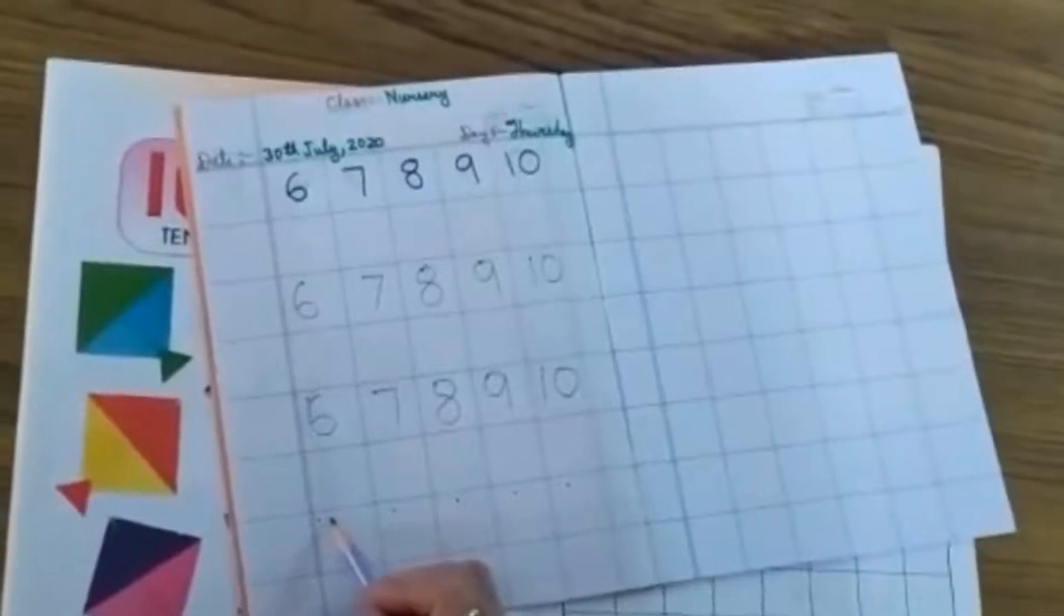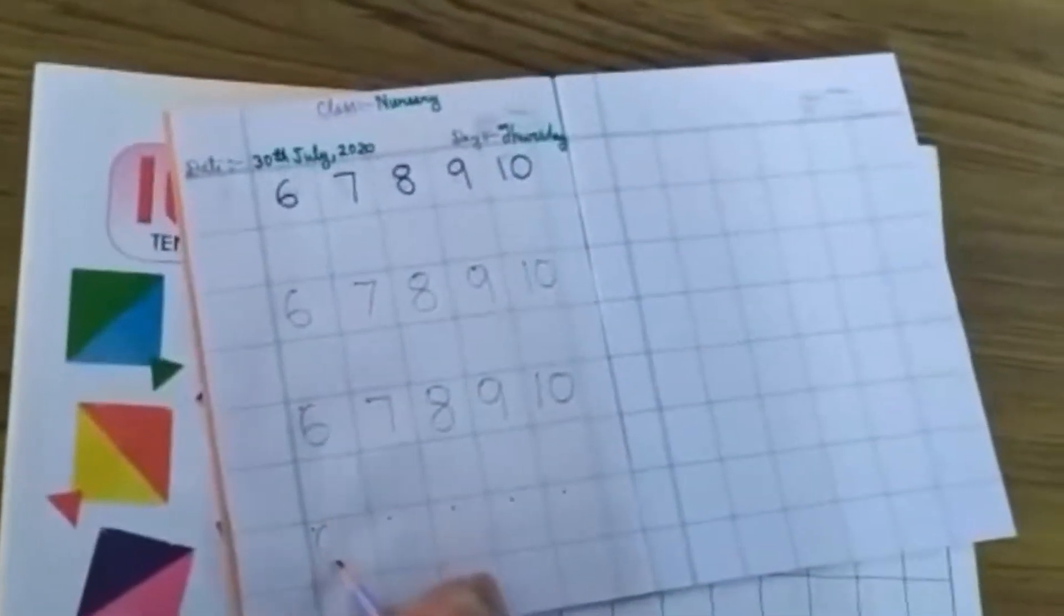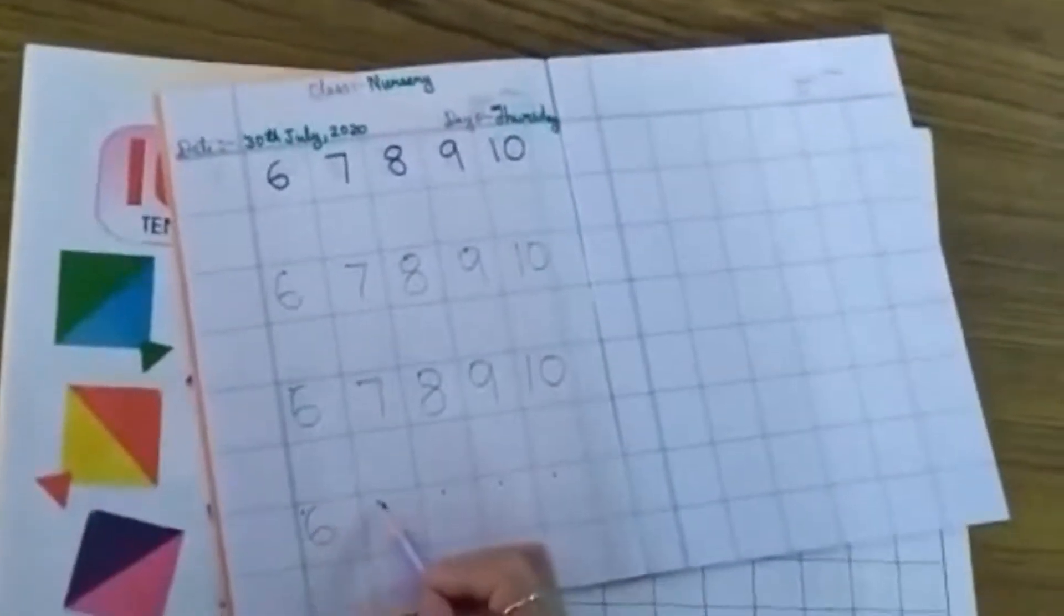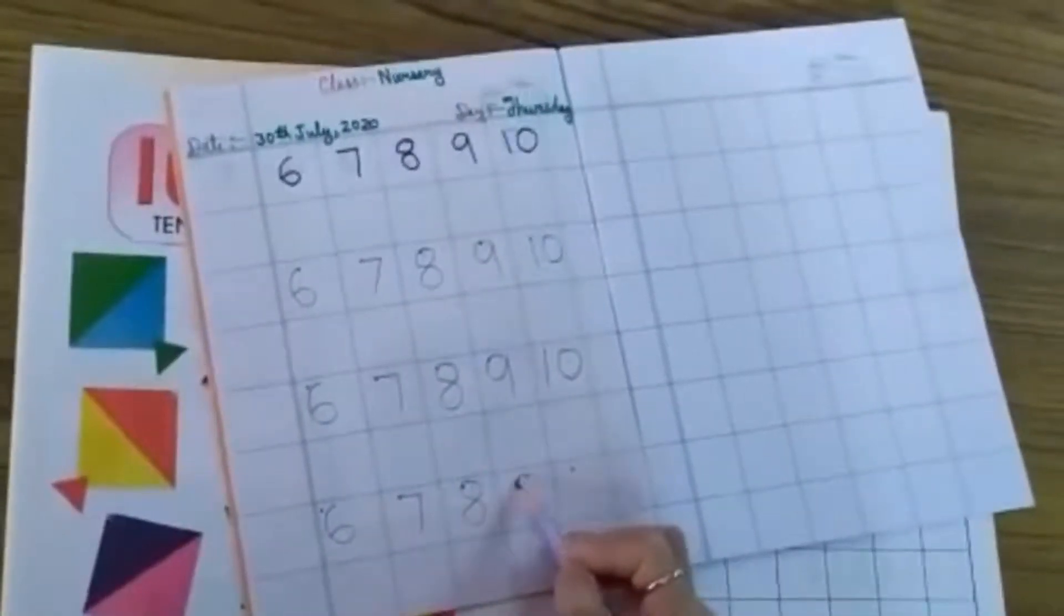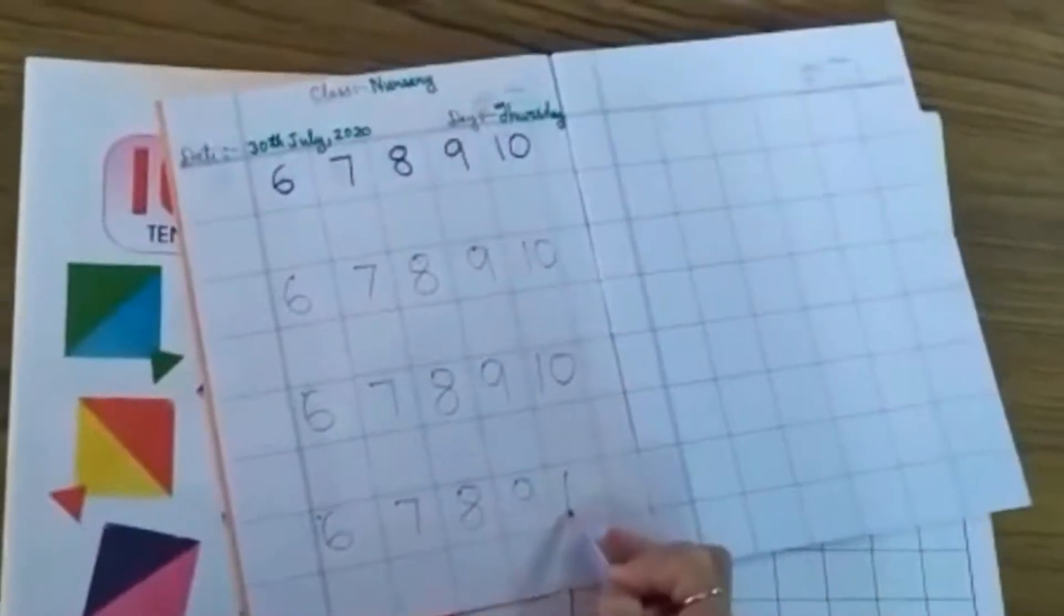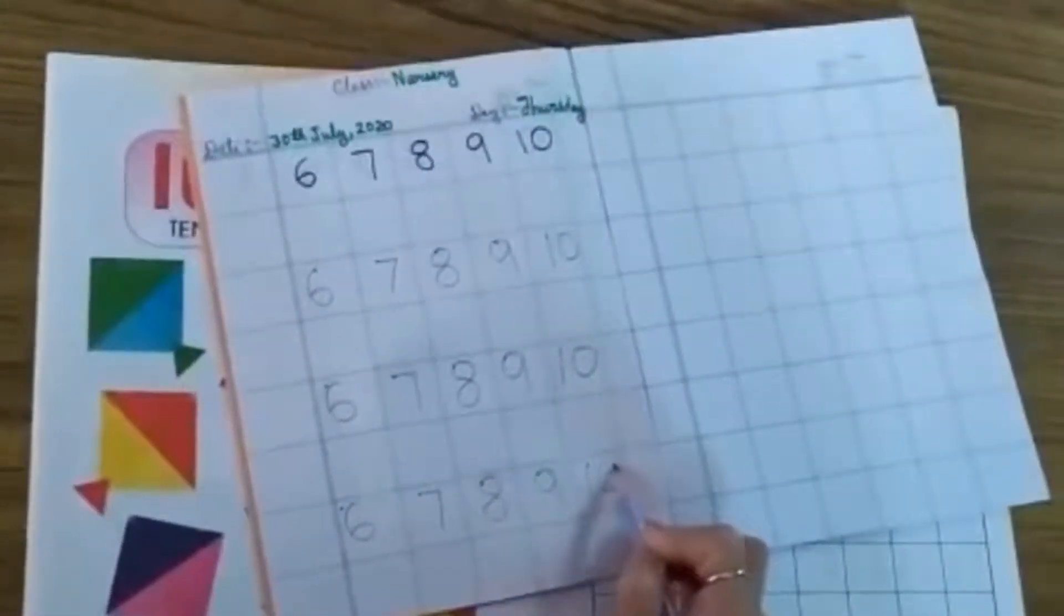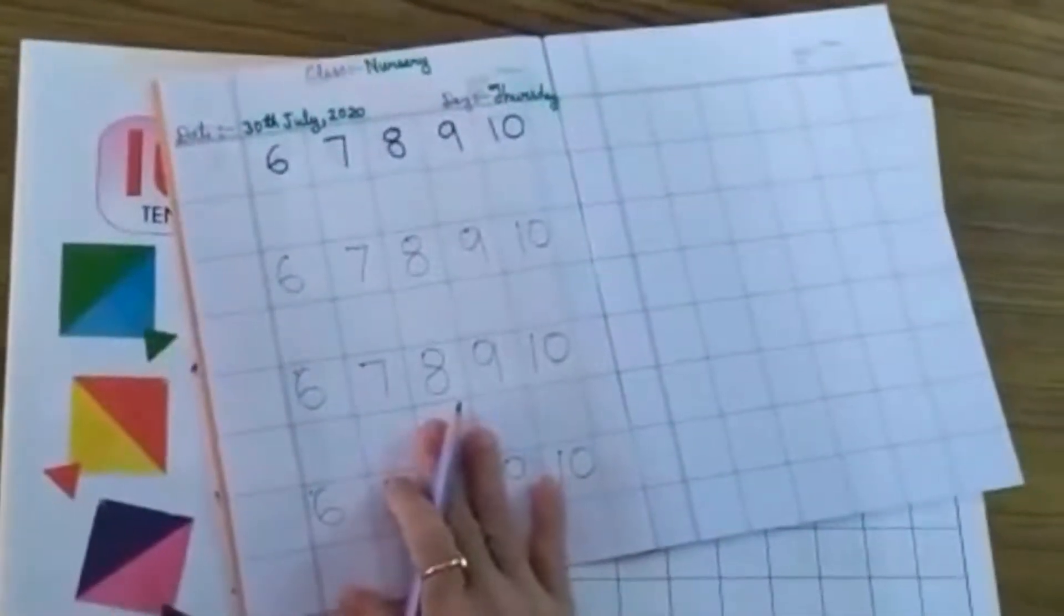Then again write on this dot number 6, number 7, number 8, number 9 and 1, 0, 10. This is your homework.